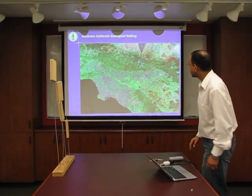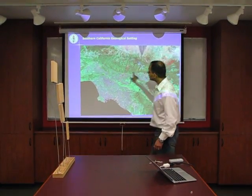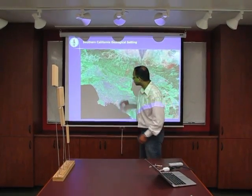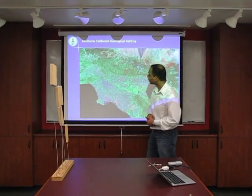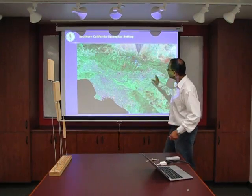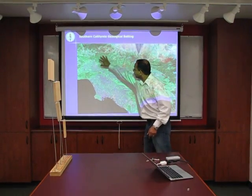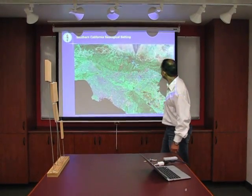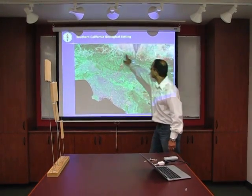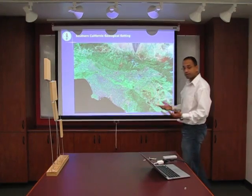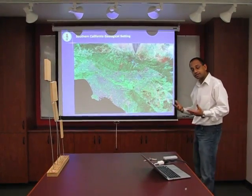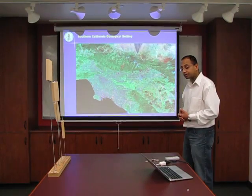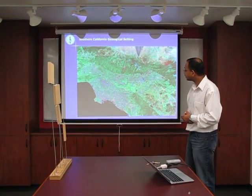If you look at Los Angeles, here is the Los Angeles basin. The deepest part of the basin is on the order of 10 kilometers, surrounded by the very stiff, very high San Gabriel Mountains. And you've got the San Andreas Fault right behind it. So what happens if the San Andreas Fault breaks and a big rupture occurs?